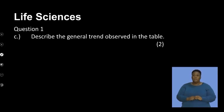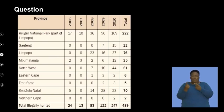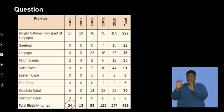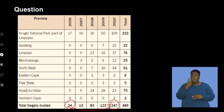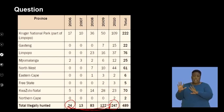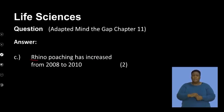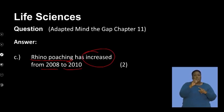The next question asks to describe the general trend observed in the table. Looking at the total numbers, we can see that from 2006 to 2010 these numbers have significantly increased. There has been a significant increase in rhino poaching from 2006 to 2010, which relates to what has happened in terms of the international trade of these horns and the demand for them.